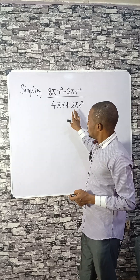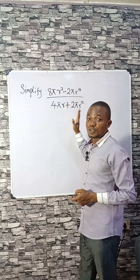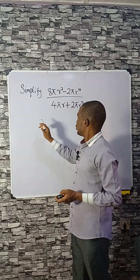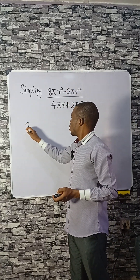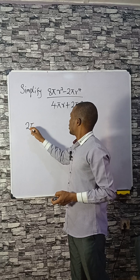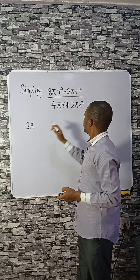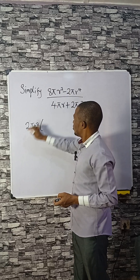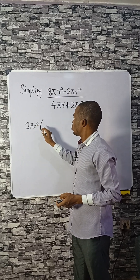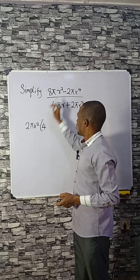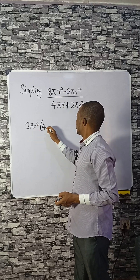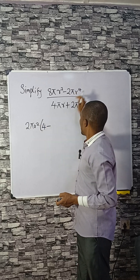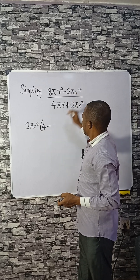Simplify this — that means reduce this to the lowest possible form. The first thing we need to do is look at the numerator. We are trying to factorize: we have 2πr². So 8 divided by 2 gives you 4, π will cancel with π, giving us r raised to the power 4 divided by...